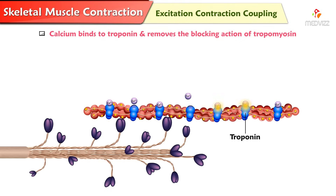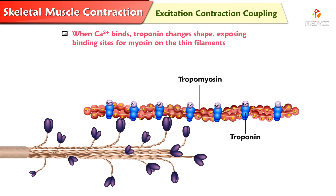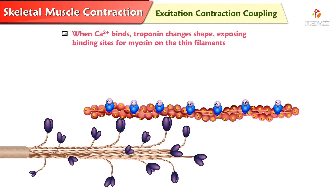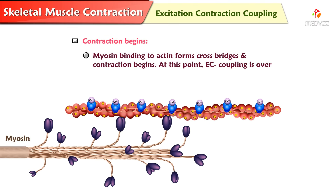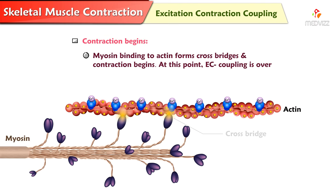Calcium binds to troponin and removes the blocking action of tropomyosin. When calcium binds, troponin changes shape, exposing the binding sites for myosin on the thin filaments. Contraction begins. Myosin binding to actin forms cross bridges and contraction begins. At this point, the excitation-contraction coupling is over.